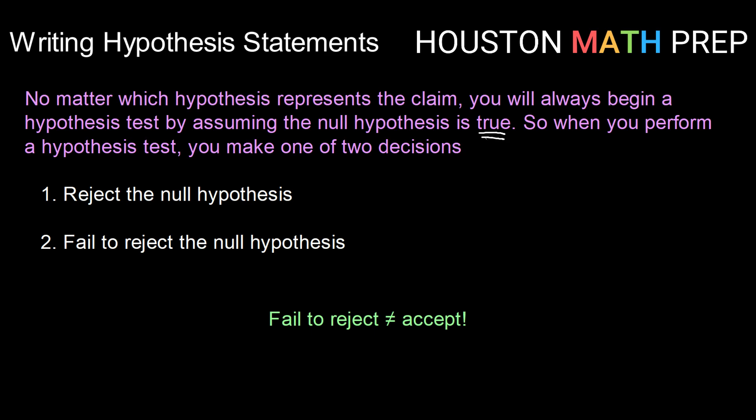So that means when you make a decision, your decision is always based upon your null hypothesis. You can either reject the null hypothesis and say that there's not enough evidence to support that the null hypothesis is true, or you can fail to reject. You can say there is not sufficient evidence to reject the null hypothesis. But it's important to note here that failing to reject the null hypothesis is not the same thing as accepting the null hypothesis.